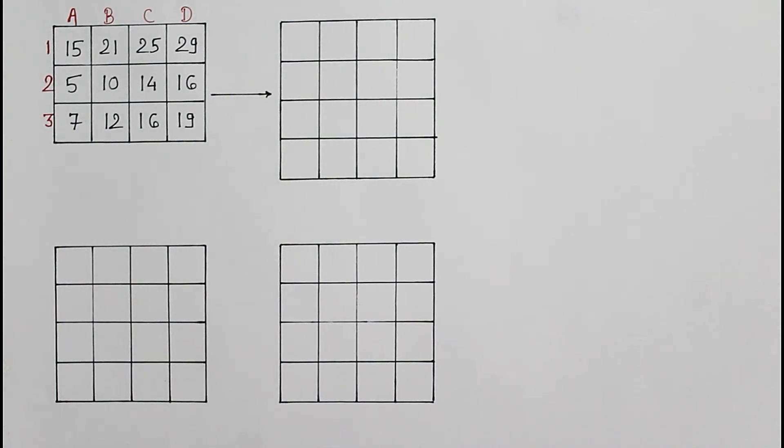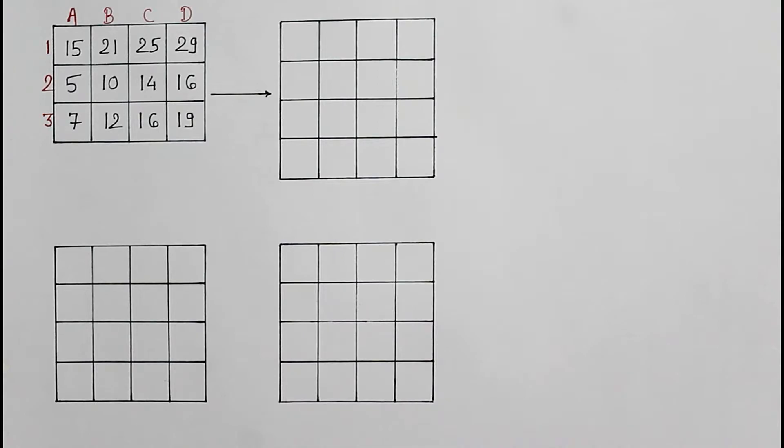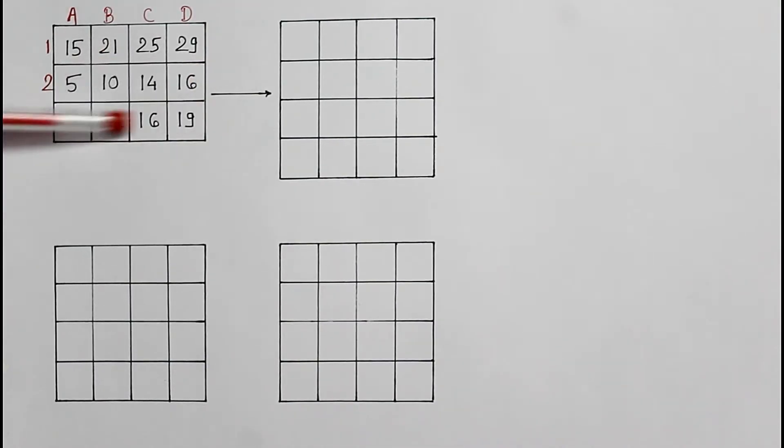This is called a non-square or unbalanced matrix. One, two, three rows are there and a total of four columns.